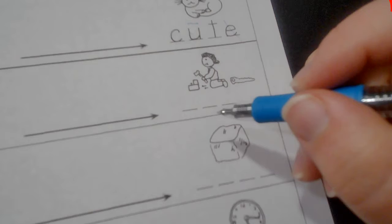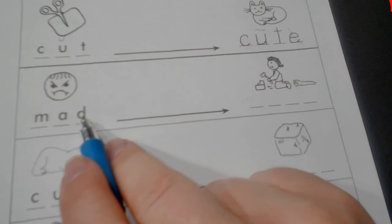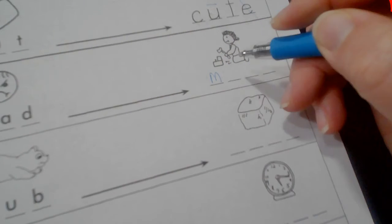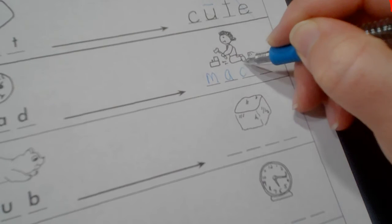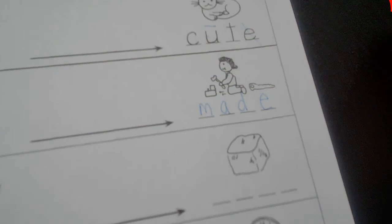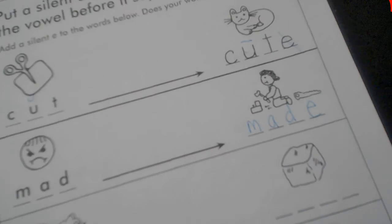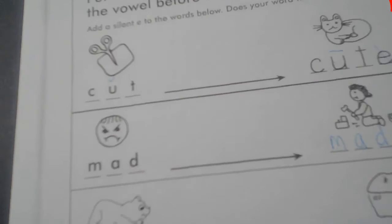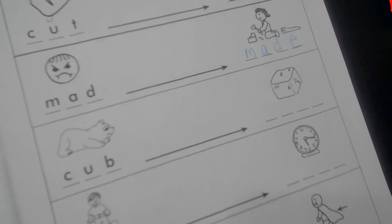If we add an E to it, M-A-D, add the E, it is made. Made, sorry this is hard to see this color. Let's do a darker color. Okay.